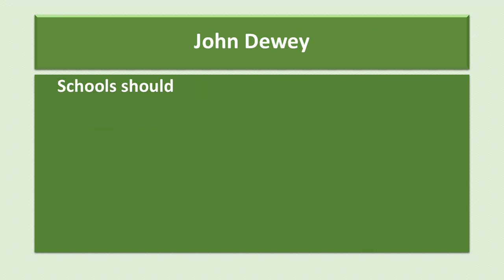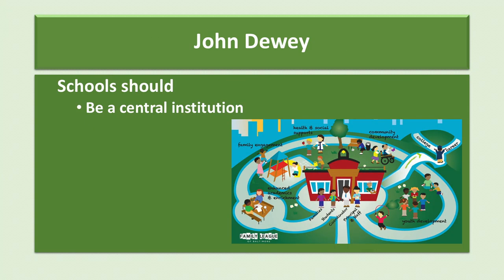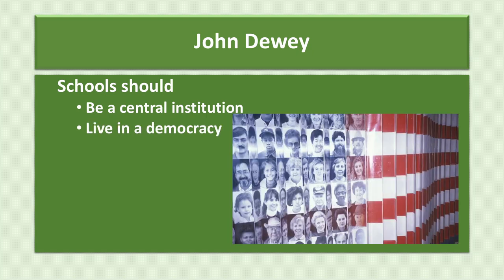John Dewey thought that schools should be a central institution in the community where not only children and youth could be acculturated into the society, but also provide opportunities for adults to better their lives. He thought the community should be an important focus of schooling and that children and youth should participate in the community as part of their formal education. More specifically, Dewey thought that the primary aim of the school should be the preparation of children and youth to live and participate in the functioning of the democracy.